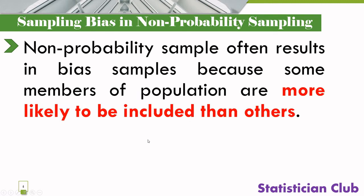In non-probability sampling, the result is biased samples because some members of the population are more likely to be included in the sample than others, so bias exists in such cases.